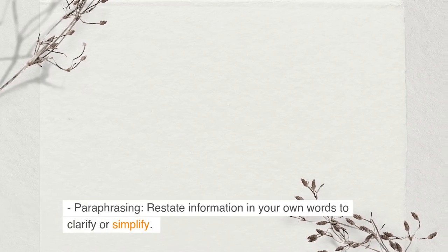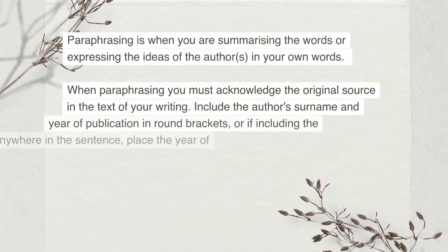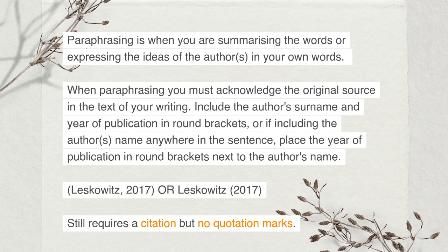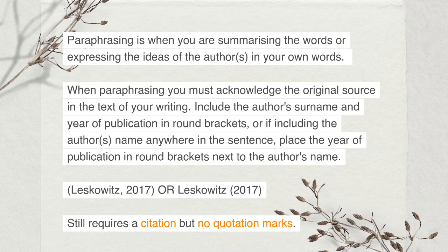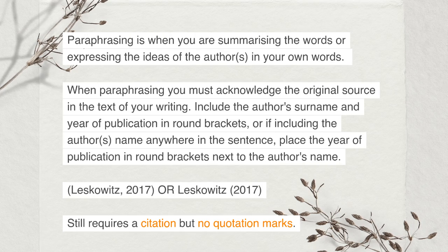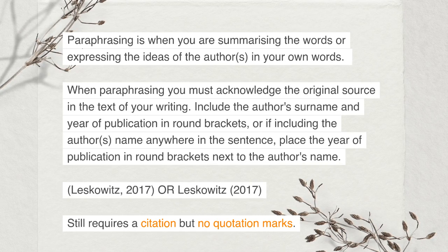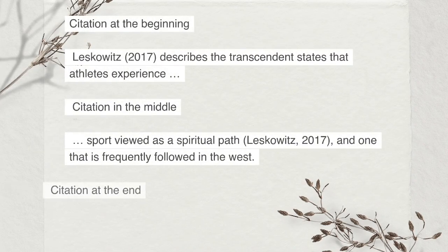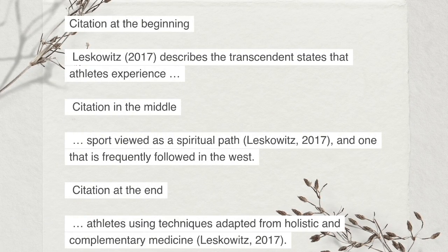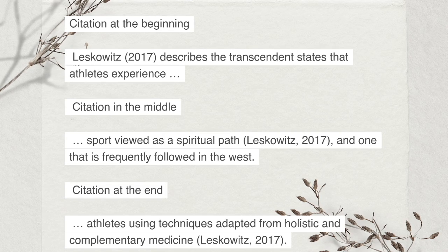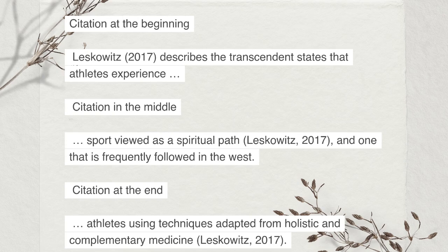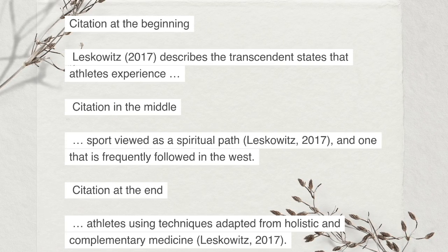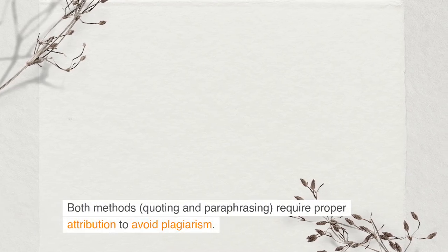Paraphrasing: restate information in your own words to clarify or simplify. Paraphrasing is when you are summarizing the words or expressing the ideas of the authors in your own words. When paraphrasing, you must acknowledge the original source in the text of your writing. Include the author's surname and year of publication in round brackets, or if including the author's name in the sentence, place the year of publication in round brackets next to the author's name. Citation at the beginning: Leskowitz (2017) describes the transcendent states that athletes experience. Citation in the middle: Sport viewed as a spiritual path (Leskowitz, 2017) and one that is frequently followed in the West. Citation at the end: Athletes using techniques adapted from holistic and complementary medicine (Leskowitz, 2017). Both methods — quoting and paraphrasing — require proper attribution to avoid plagiarism.